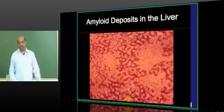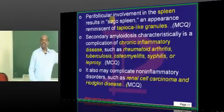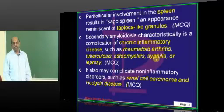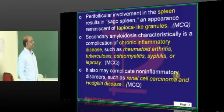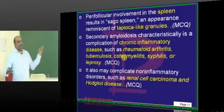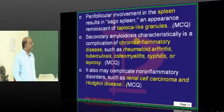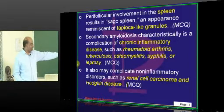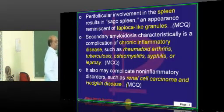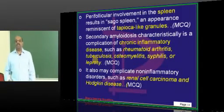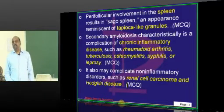In the liver, these are the typical amyloid deposits to remember. In the spleen, there is perifollicular involvement with tapioca-like granules — this is called sago spleen. The inflammatory conditions associated with secondary amyloidosis include rheumatoid arthritis, tuberculosis, osteomyelitis, syphilis, leprosy, and other mycobacterial chronic inflammatory states. Hodgkin's disease and renal cell carcinoma are non-inflammatory disorders that can also lead to secondary amyloidosis.